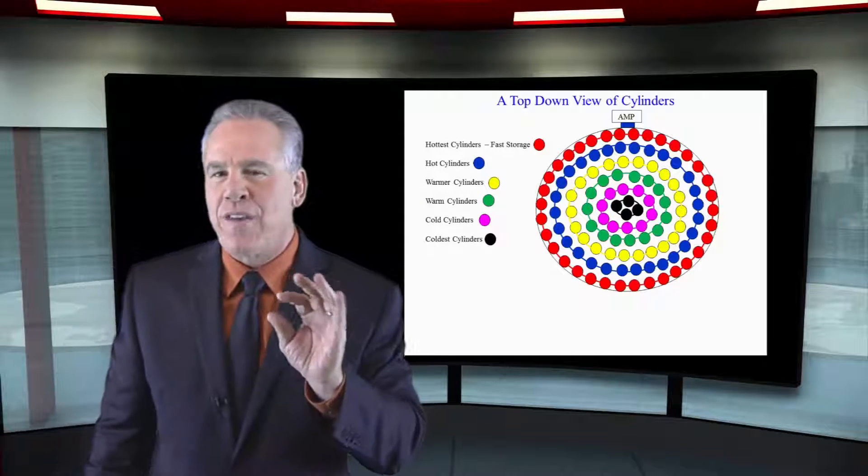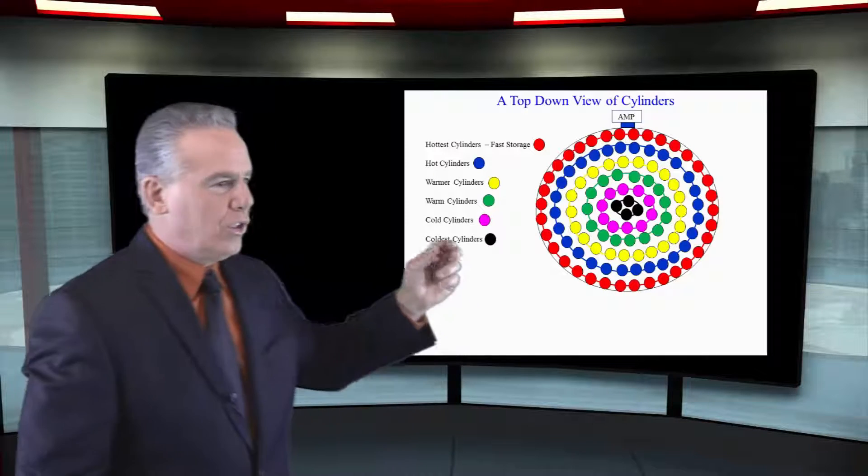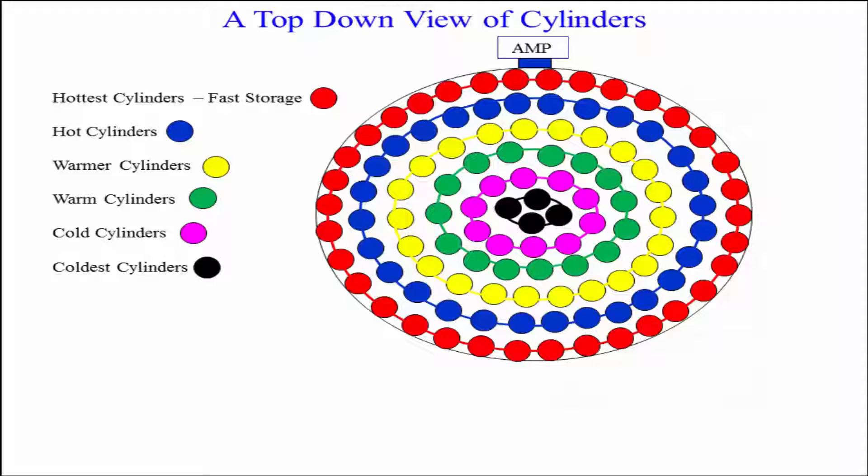But this is fascinating. Take a look at a top-down view of this disk. Look at all of the varying cylinders and notice that on the outside are the red cylinders and it moves to the blue and the yellow and the green and inside are the black cylinders.